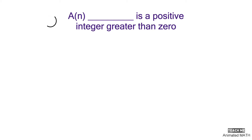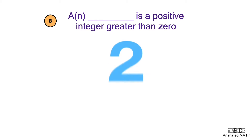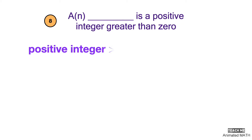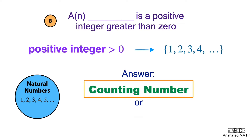A blank is a positive integer greater than zero. This describes the set of numbers that include 1, 2, 3, 4, and so on. This is the set of counting numbers or natural numbers. The answer is counting number or natural number.